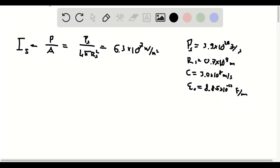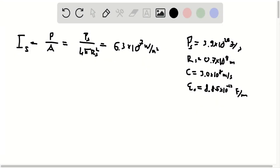Hello everyone. This is a solution to problem 33 of chapter 24 of college physics. Here we're asked to estimate the amplitude of the electric and magnetic fields of the electromagnetic waves emitted by the sun near its surface.